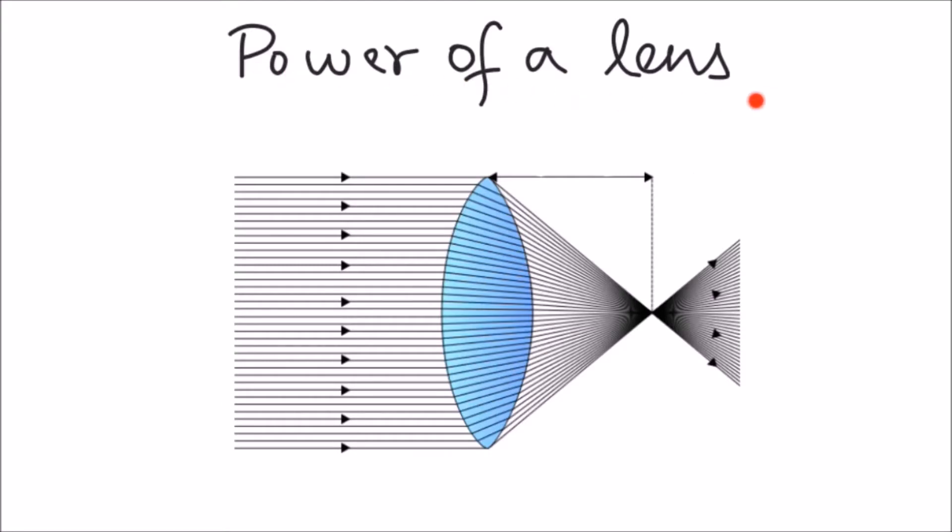The power of a lens is the ability of a lens to deviate the light rays passing through it. Convex lens has the ability to converge rays whereas a concave lens has the ability to diverge.